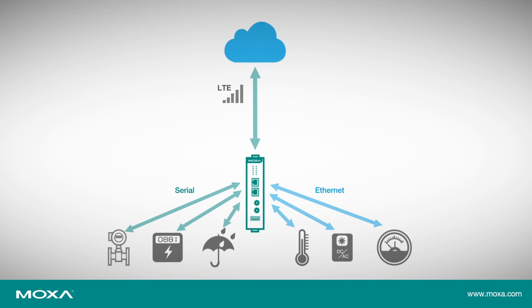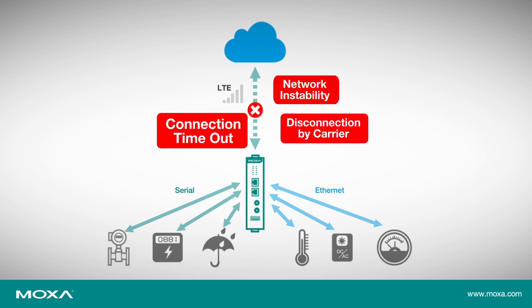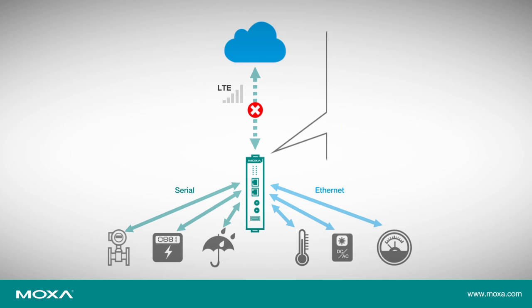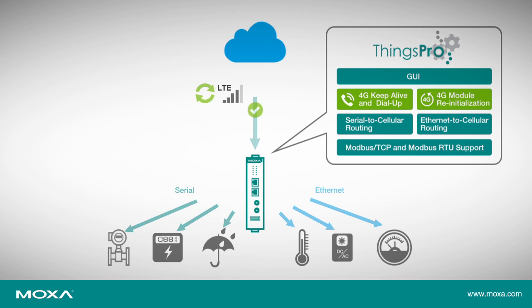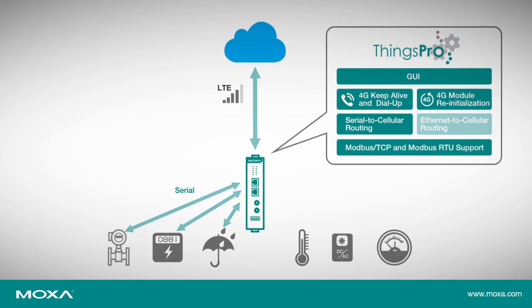Constant internet connectivity and rapid deployment of devices are mission-critical requirements for industrial IoT applications. The built-in wireless manager tool in ThingsPro provides 4G LTE communication capability with a keep-alive function that ensures a continuous connection and prevents data loss. The serial-to-cellular and ethernet-to-cellular routing functions help connect most types of peripheral devices to the 4G network.